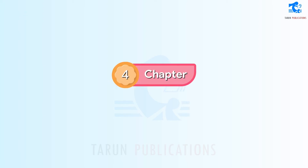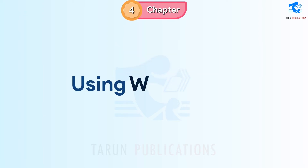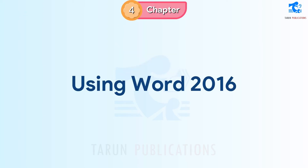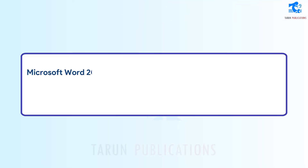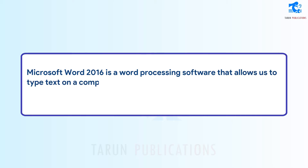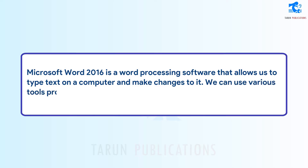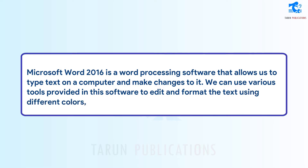Chapter 4: Using Word 2016. Microsoft Word 2016 is a word processing software that allows us to type text on a computer and make changes to it. We can use various tools provided in this software to edit and format the text using different colors, pictures, and styles.